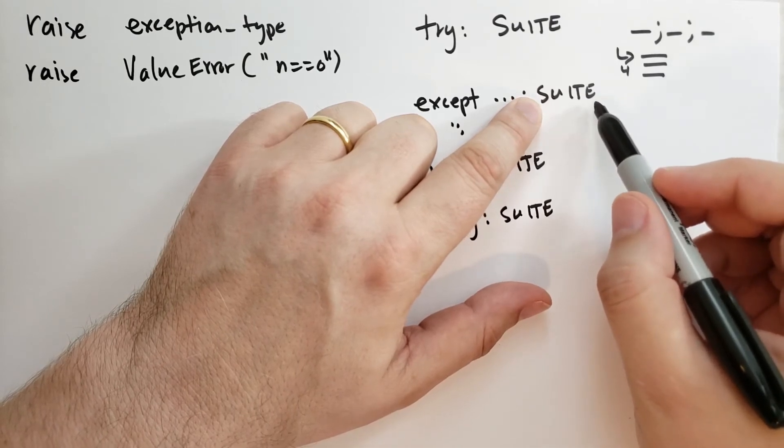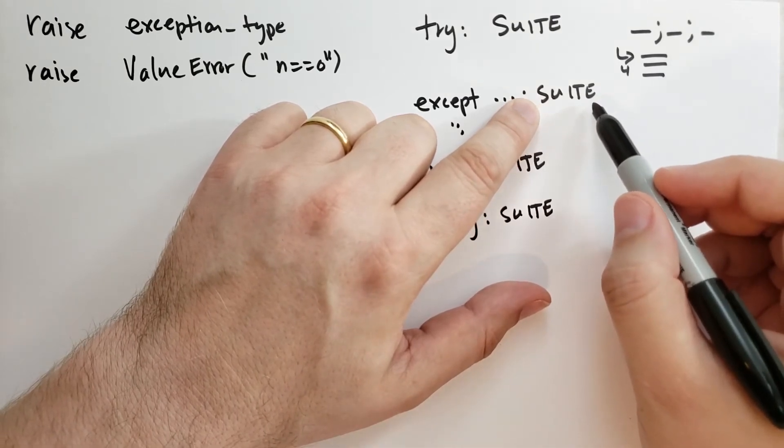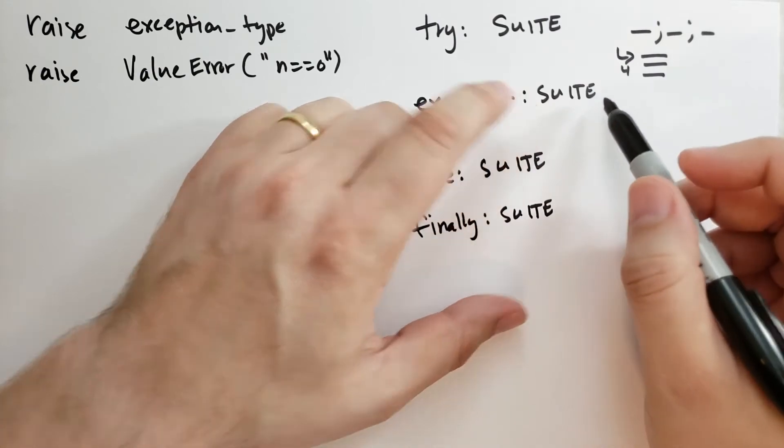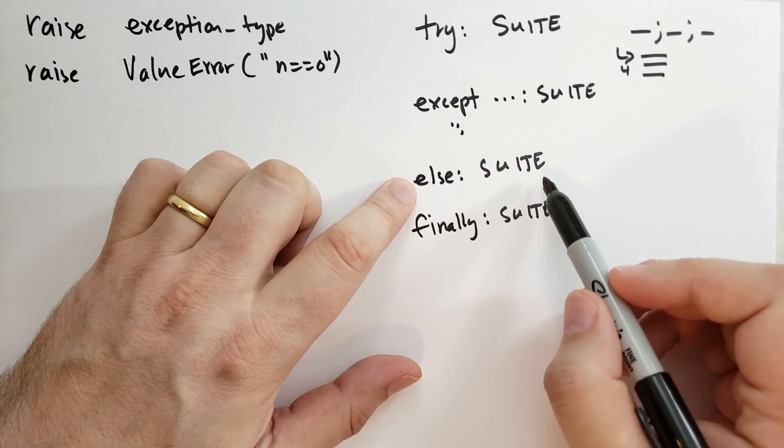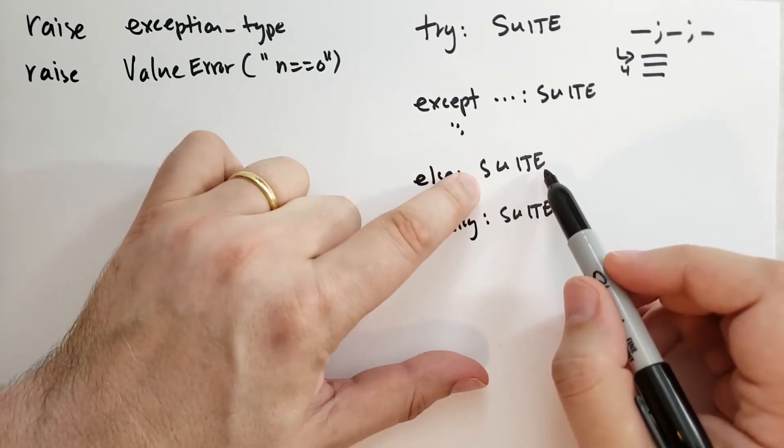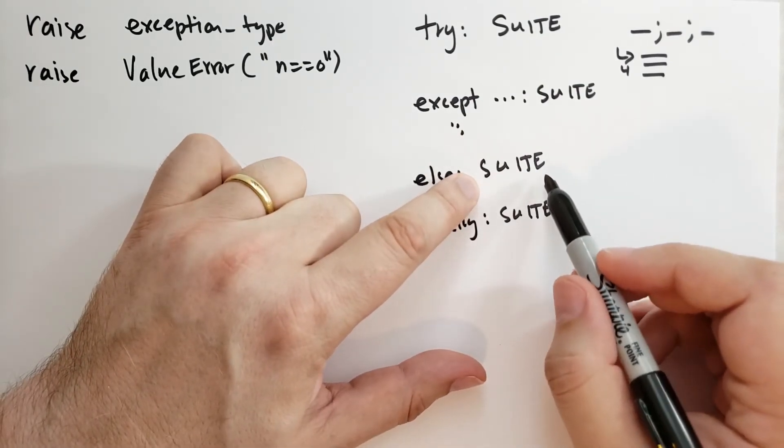And that suite itself could raise an exception, it could return a value, or it could just execute completely normally. If there was no exception in the try suite, then the else block is called. Again, the suite inside the else block can return, it can raise an exception, or just complete normally.